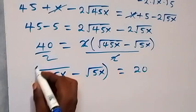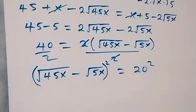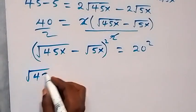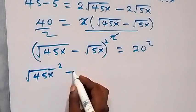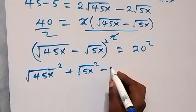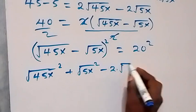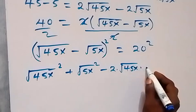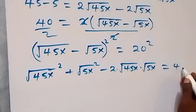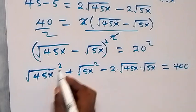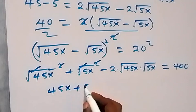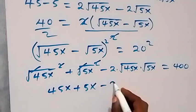Now let's square both sides again. The expansion gives us: root 45x squared, plus root 5x squared, minus 2 times root 45x times root 5x, equals 400.